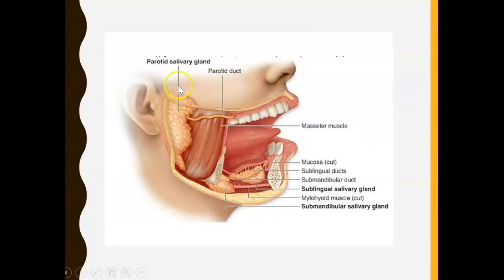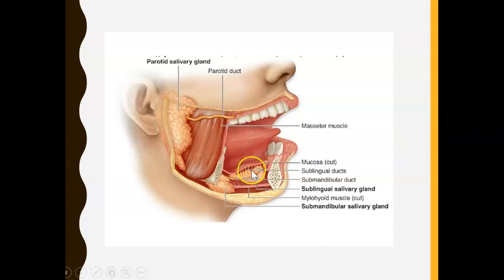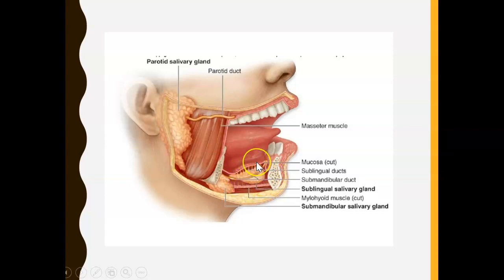The parotid salivary gland has a parotid duct, also known as Stenson's duct. The gland makes saliva, which travels through the duct and releases into the mouth to keep it moist. The submandibular salivary gland has a duct known as Wharton's duct, which drains into the mouth. The sublingual gland releases saliva out right underneath the tongue onto the floor of the mouth.